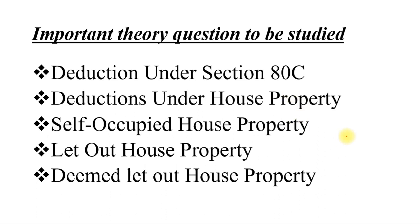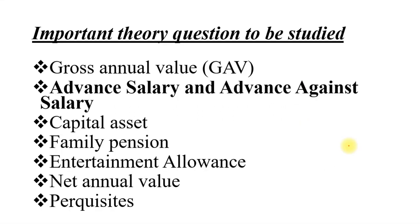The next topic is Gross Annual Value, also known as GAV. This is again a topic under house property. You can give a small explanation of what it is and then draw the chart showing how to get the value of GAV.